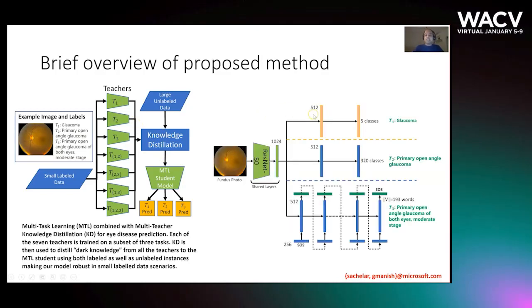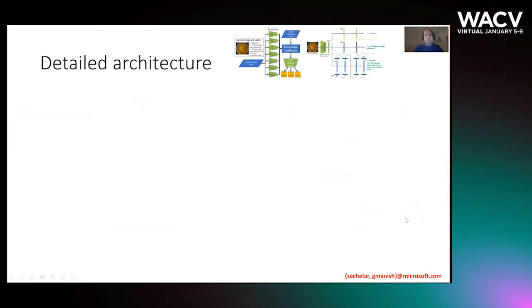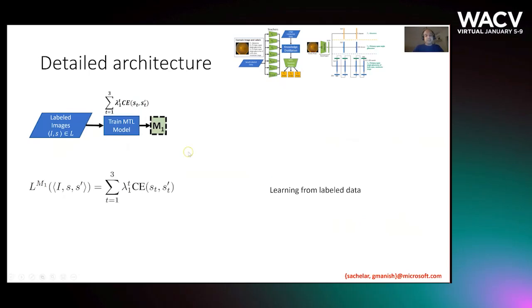Now this is more details about our multitask learning setup. Given the image, we use ResNet 50 which is a CNN model and a few feed-forward layers to come up with the final predictions. You can take the labeled images and train these kinds of models using labeled data, so we can compute cross-entropy loss between the actual labels and the predictions that we come up with, and that's basically learning from the labeled data.